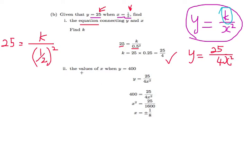The next part asks you to find the value of x when y equals 400. Since you have the equation connecting x and y, and y is 400, you simply substitute in 400. Then you find x. So x squared equals 25 over 1600, and if you square root it...